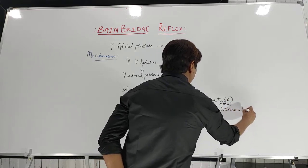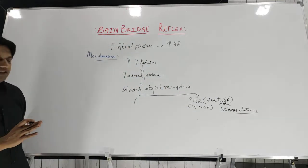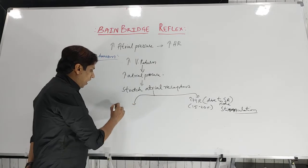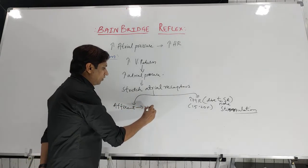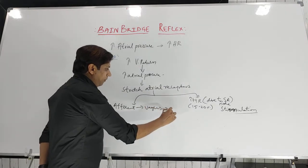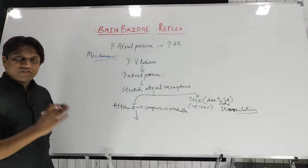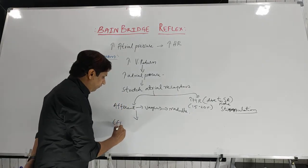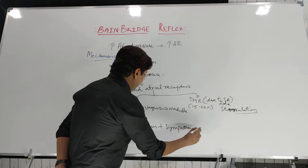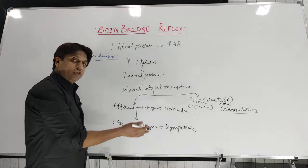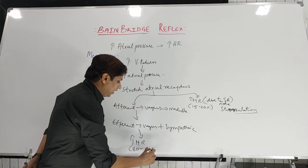The remaining 40 to 60% of the increase in heart rate is mediated through the vagus nerve — that is through the afferent fibers. From the atrial stretch receptors, the signal goes through the afferent fibers of the vagus nerve to the medulla, where the vasomotor center and cardiovascular regulating centers are situated. From the medulla, through efferent fibers — both vagus and sympathetic fibers — signals go to the heart, ultimately producing the remaining 40 to 60% increase in heart rate.